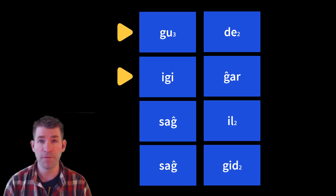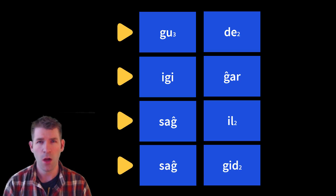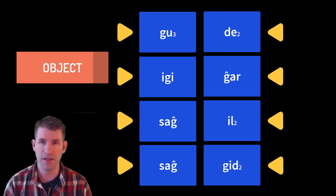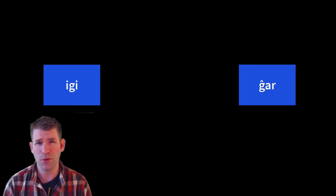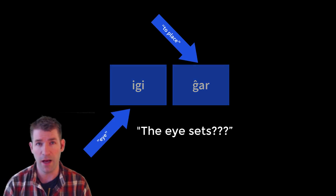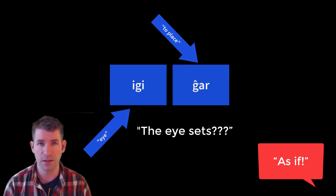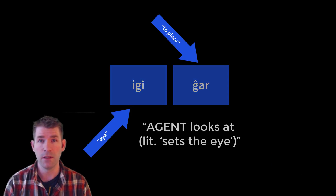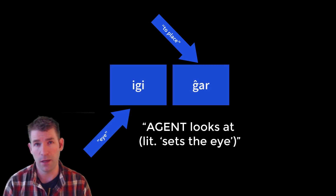In other words, the first part of the compound verb — the noun — will always be the object of the verbal component, and never the subject or agent. For example, 'igi nyar' will never be understood as 'the eye (subject) sets x.' It will always be 'the agent sets the eye (object).'